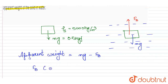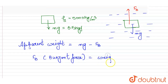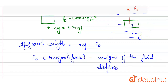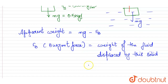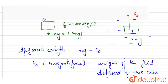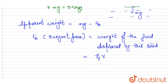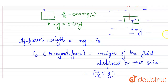So now we have to calculate this buoyancy force Fb. Buoyant force means upthrust. This buoyant force will be equal to the weight of the fluid displaced by this solid. Weight of the fluid displaced will be density of liquid into volume of solid into g. Here rho L is the density of liquid, that is density of water, which is equal to 1000 kg per meter cube.